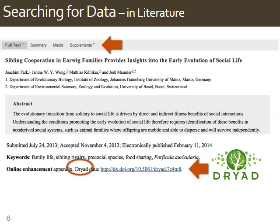Take a look at where the relevant data is stored. In this example, the data is stored in a data repository called Dryad. This might be a good repository for you to search directly for other data sets. Data repositories are sites that collect experimental data. They vary in subject, types of data collected, and size. Their primary role is archiving, but many allow searching and downloading of data.